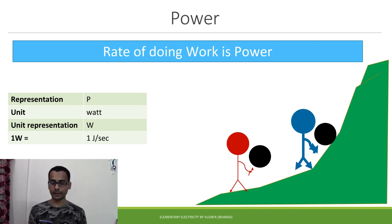And it's represented by the letter P and the unit is watt. And the unit representation is capital W. And when you say that the rate at which a person is working is one watt, it means he is doing one joule of work in one second.